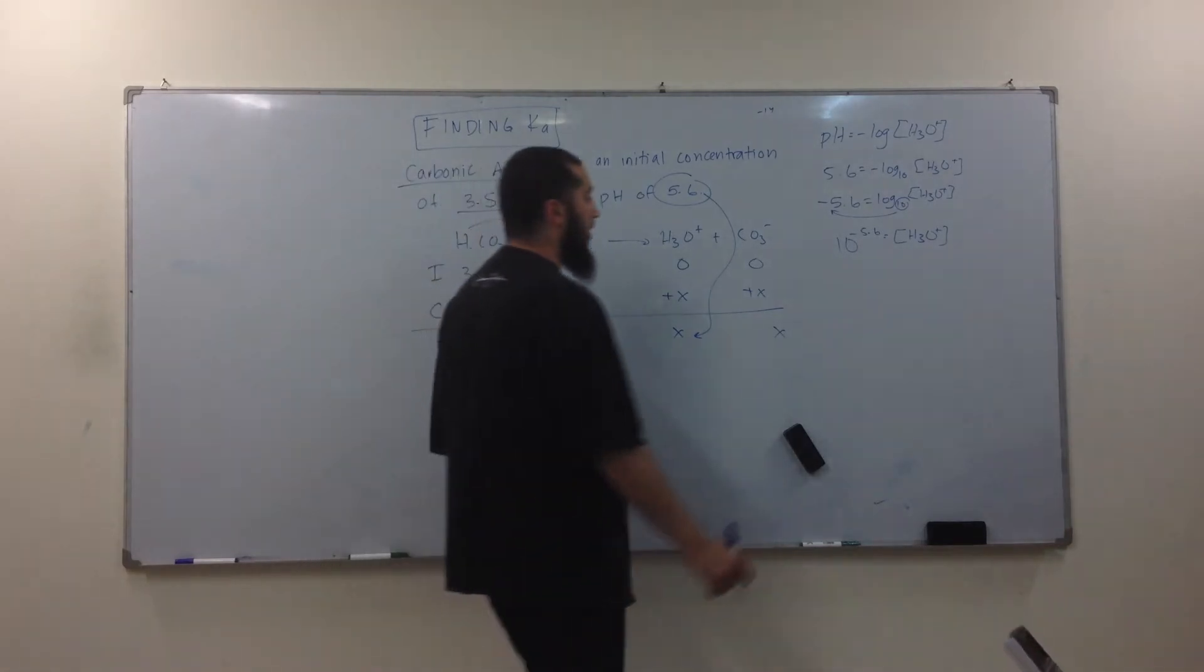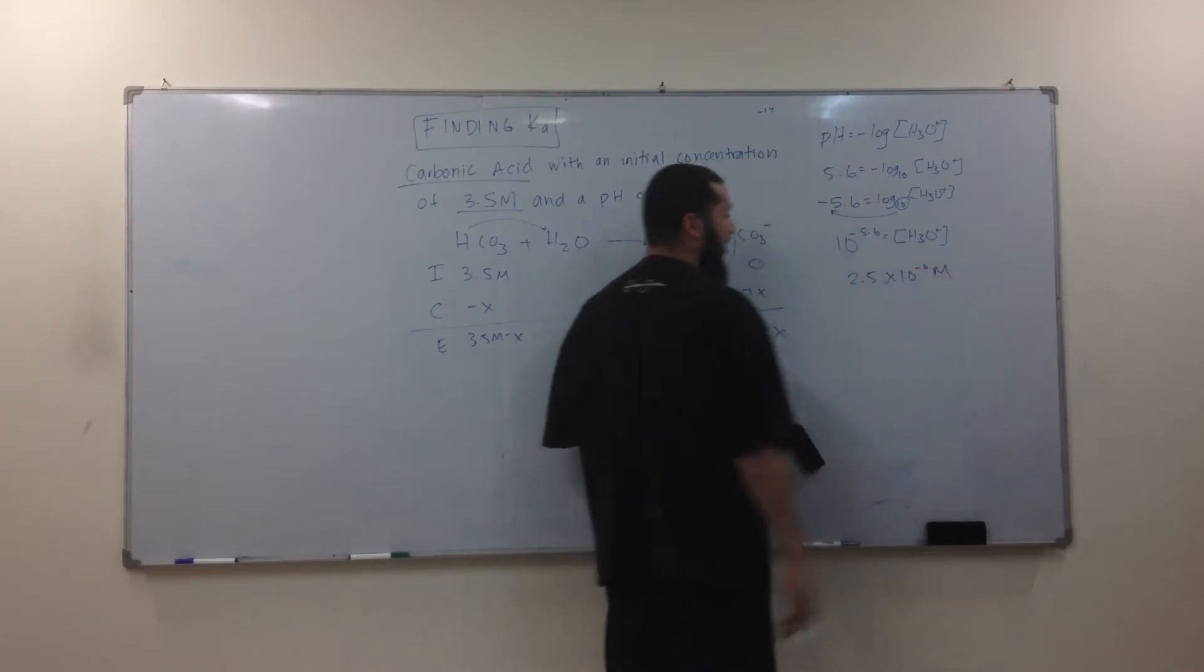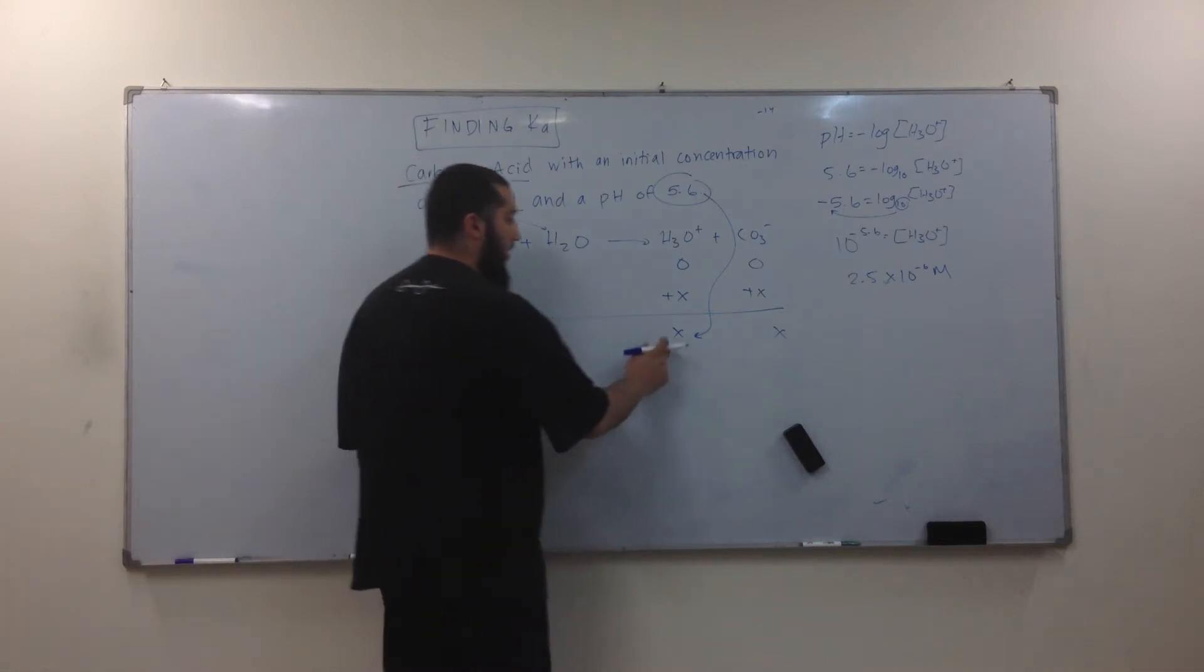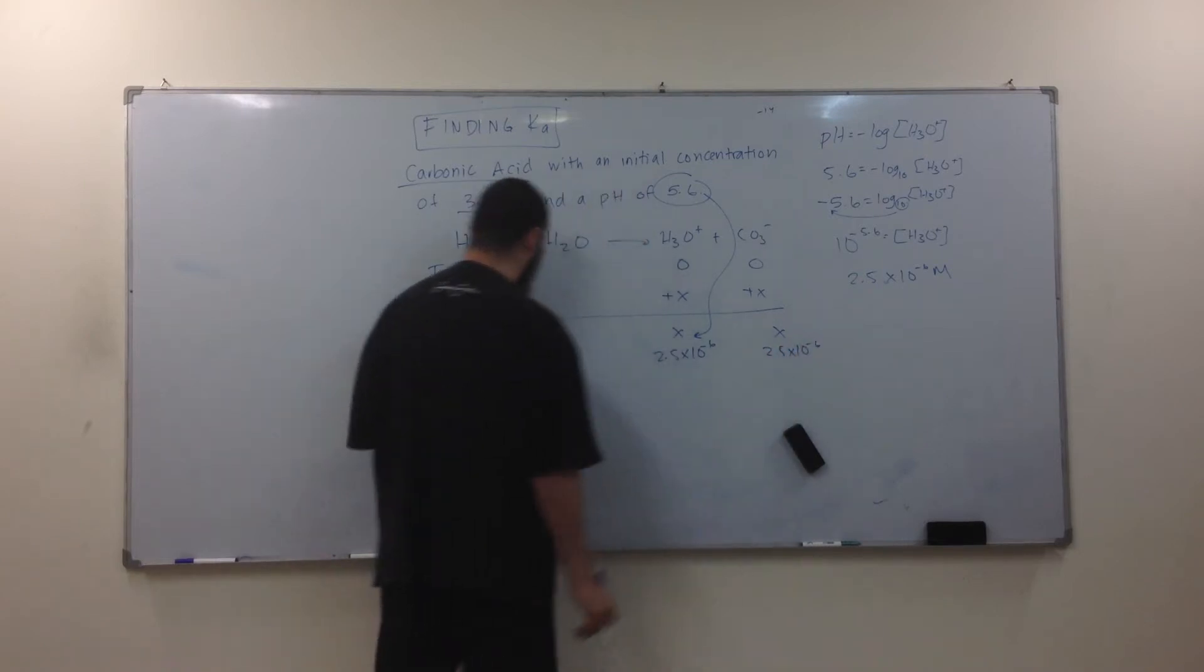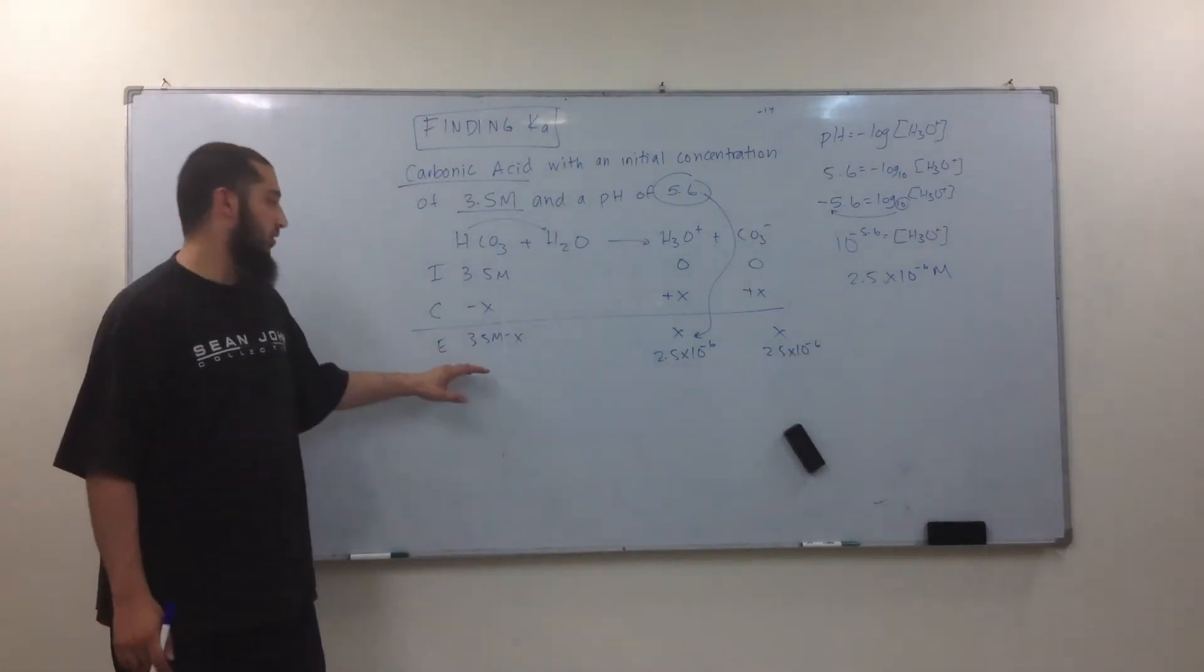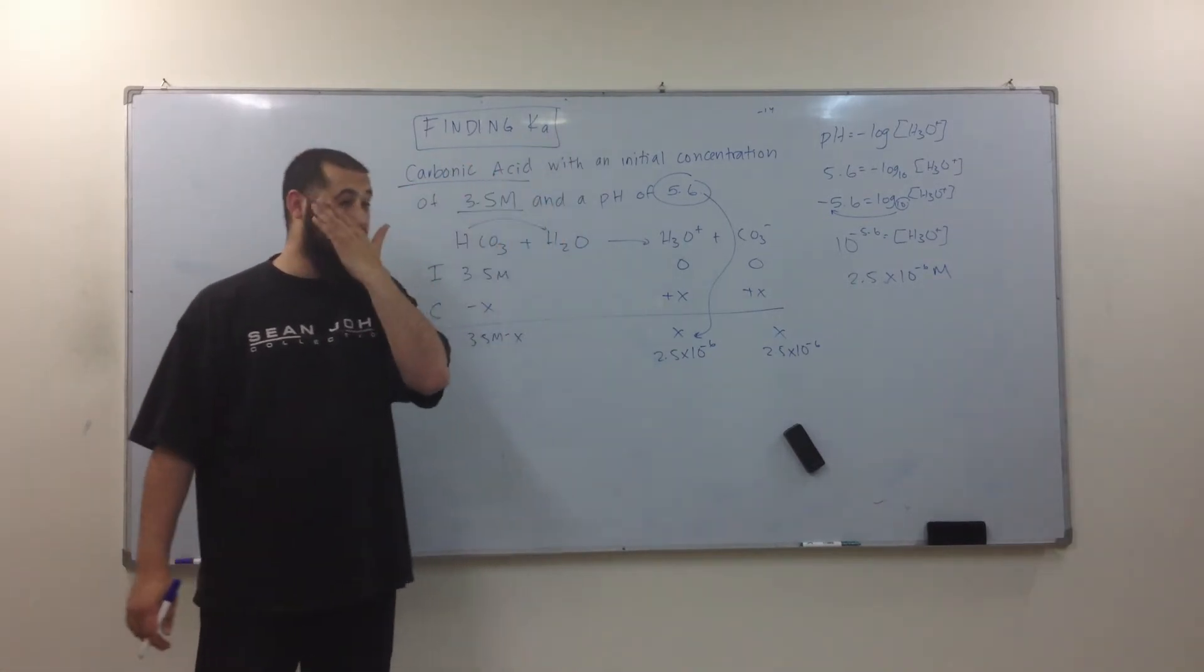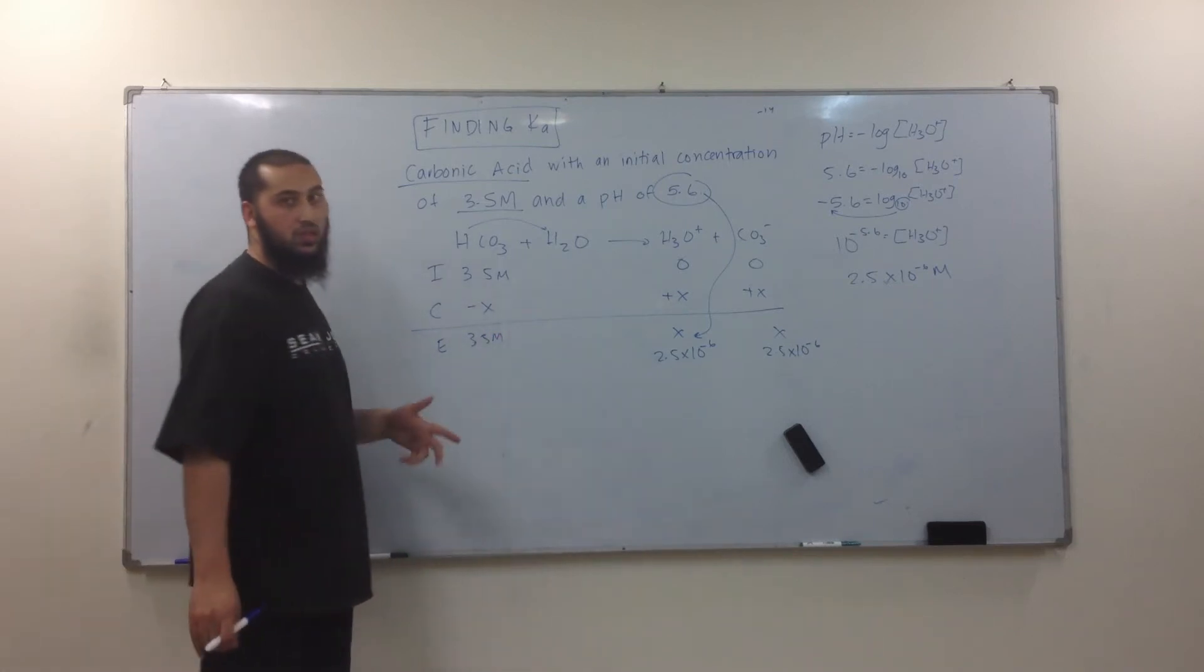2.5 times 10 to the negative 6. So where am I going to write that? That's my X now, right? So I can write it in here. 2.5 times 10 to the negative 6. I can write it here. Do I need to write it here? Look at 3.5. It looks like 2.5 times 10 to the negative 6. It's a really small number. So we don't need to write it here. We can just leave it at 3.5. So now what am I going to do?